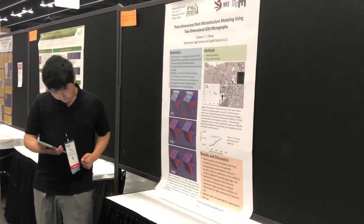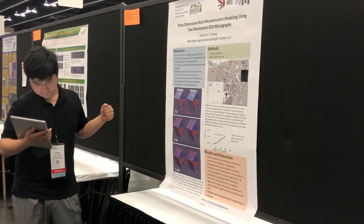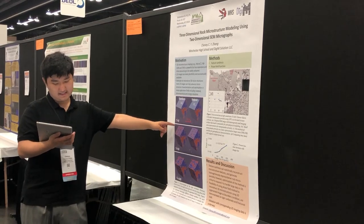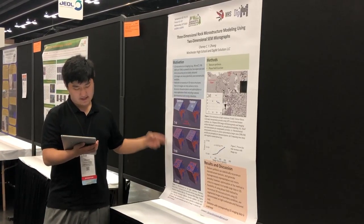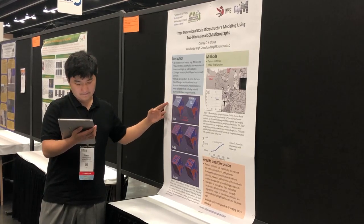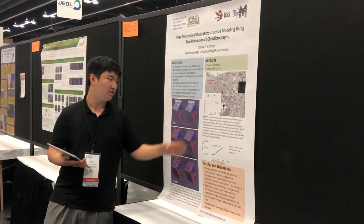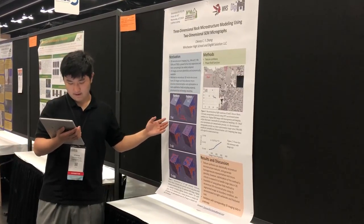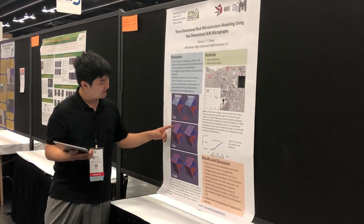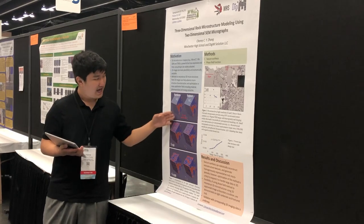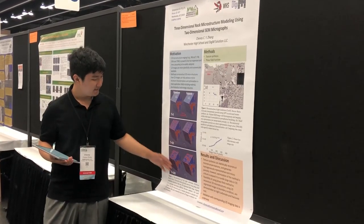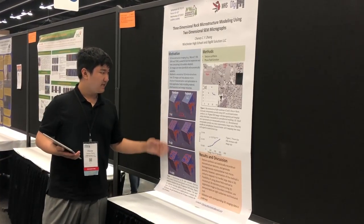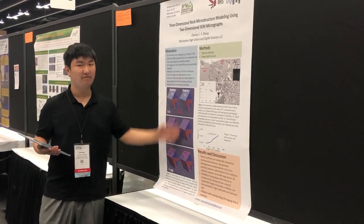The next method we're going to look at is phase field function. This is a 2D SEM image, and the left column shows this 2D SEM image being initialized with random numbers, whereas the right column shows this image being initialized with repeated numbers. T here represents iterations — by 50 iterations our image is already shaping up nicely, and by 100 it's formed well enough. The random initialization actually takes less time than the repeated initialization.